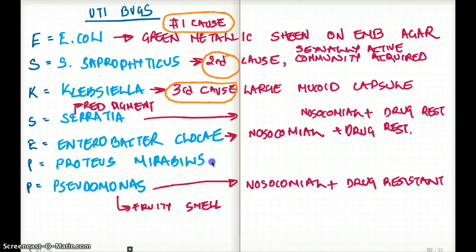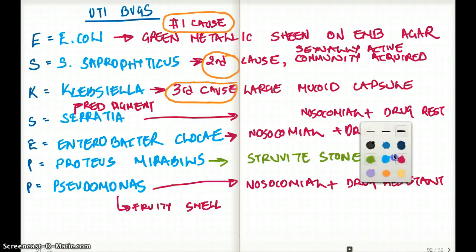Now there is one bug in this population which causes struvite stones. And those are Proteus mirabilis. And these struvite stones are also urease-positive bugs. Now which of these bugs is going to cause a swarming motility on agar? That's also going to be our Proteus.